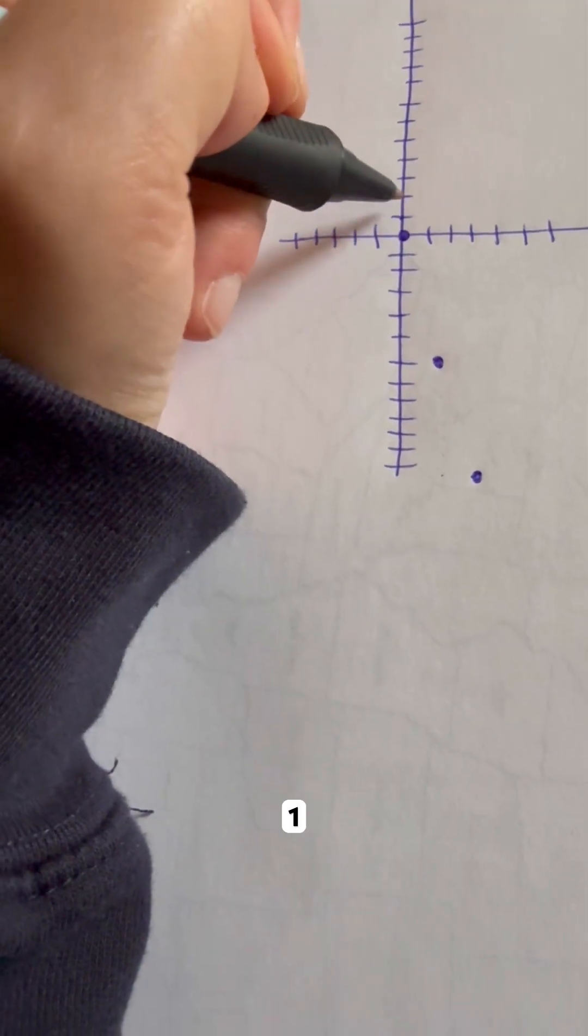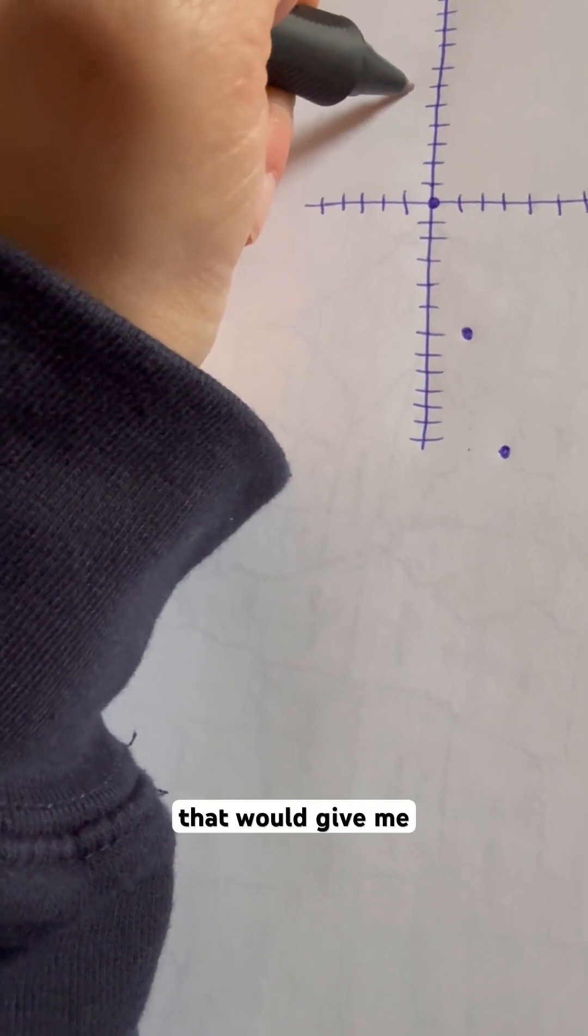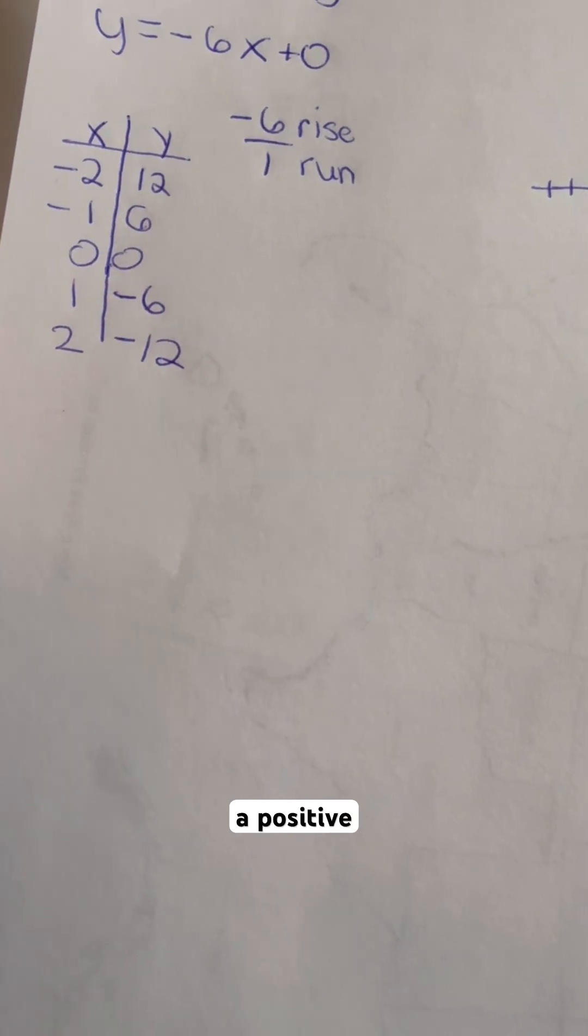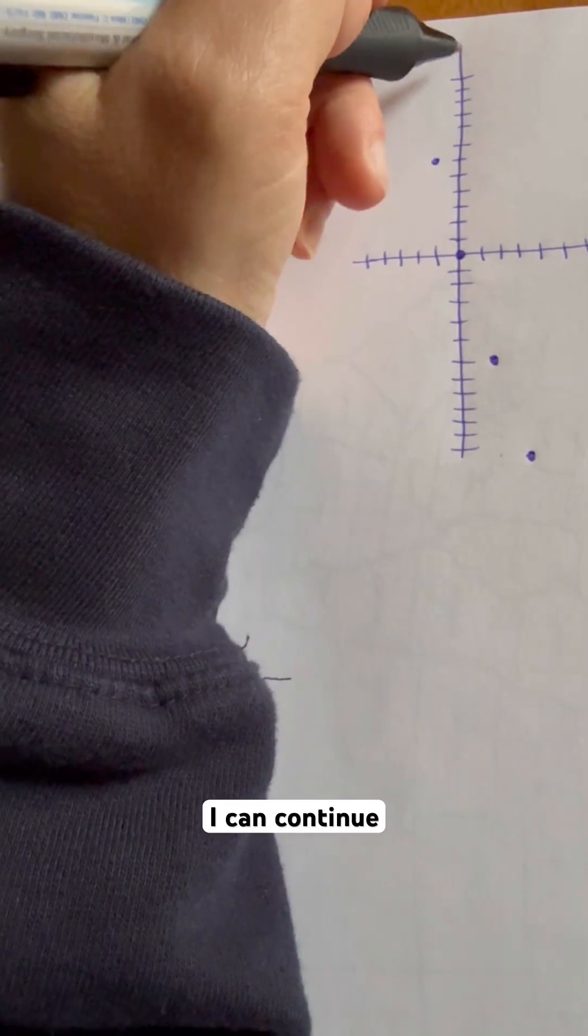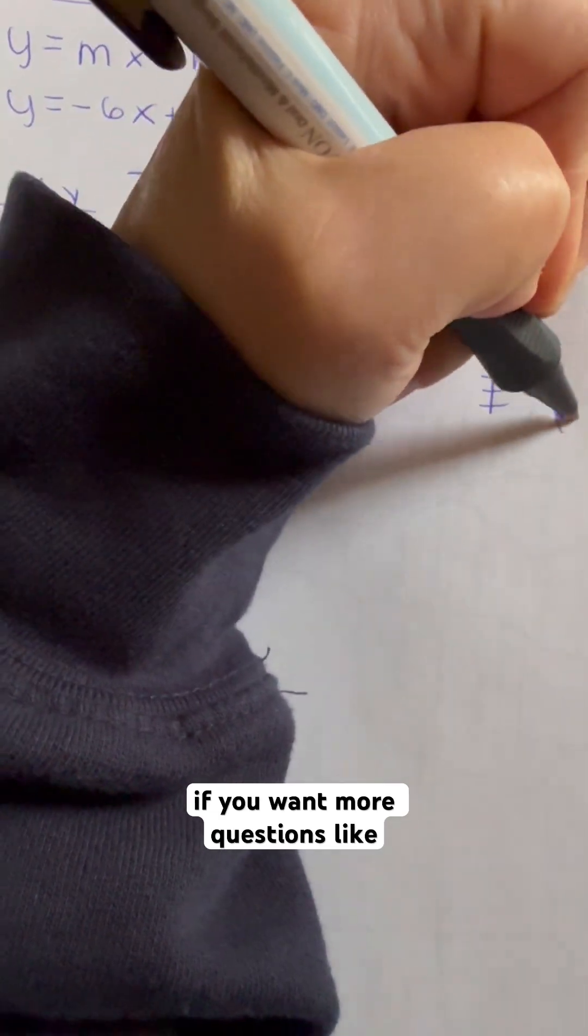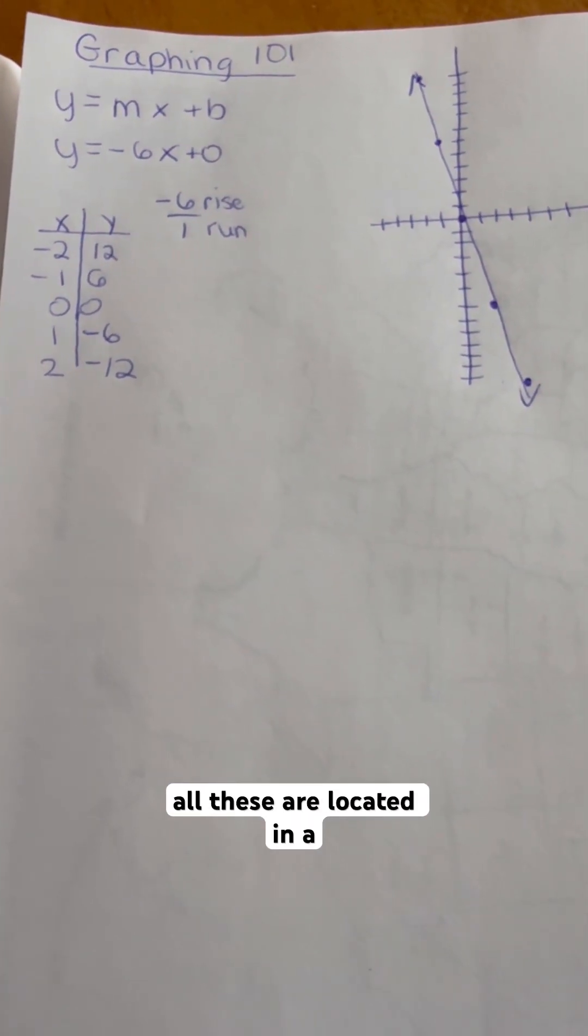I can go up also. 1, 2, 3, 4, 5, 6. But then go to the left one. And that would give me this point right here. Now you have 1 and a positive 6. And I can continue on my journey that way. Connect my points. If you want more questions like these, find them on my YouTube, Instagram, and TikTok at 1Algebra. All these are located in a linear plane.